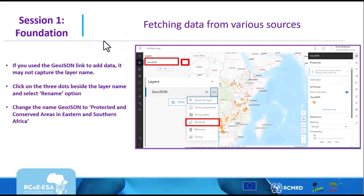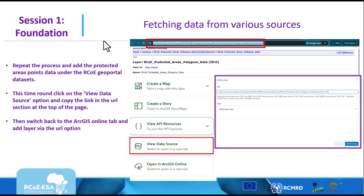Once your layer is added to the map, rename it. Go to that layer, click on the three dots beside it, and choose the Rename option. Give it the name Protected and Conserved Areas of your country — select the country you are from. Click on Rename, and the name of the layer will change.